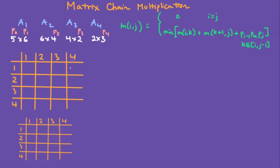I'm going to show you how to fill in the tables for the matrix chain multiplication and later on splitting the matrices. Here's the formula: when i is equal to j, you just fill in zeros, and you can basically ignore all of these.